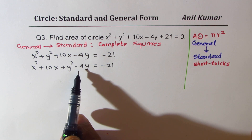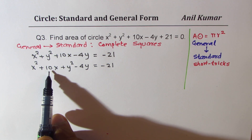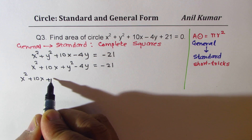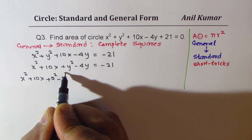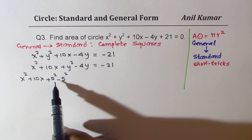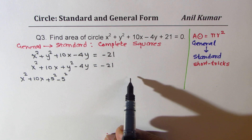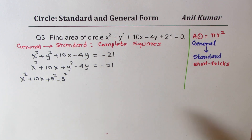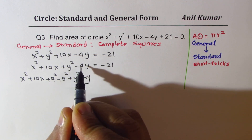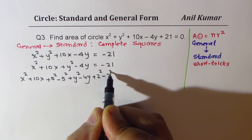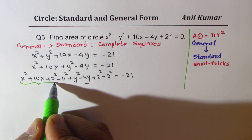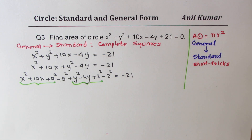To complete the square, we add and subtract half of the coefficient of x and y. Half of 10 is 5, so we add and subtract 5² inside the x group. Half of 4 is 2, so we add and subtract 2² inside the y group: (x² + 10x + 5² - 5²) + (y² - 4y + 2² - 2²) = -21.